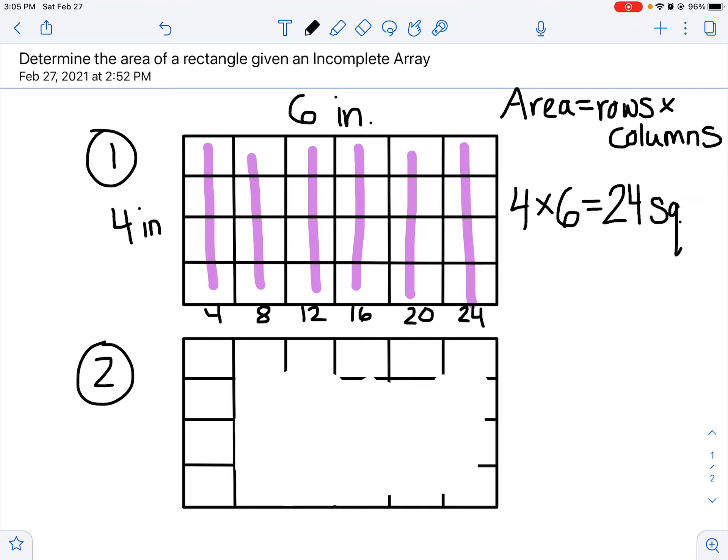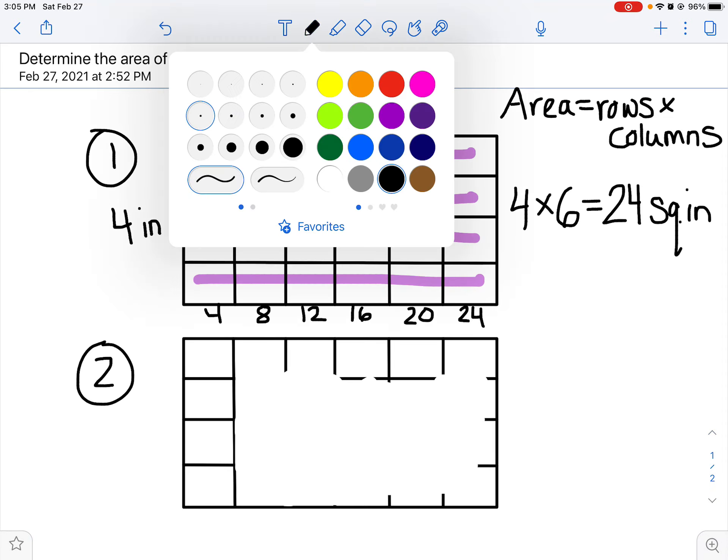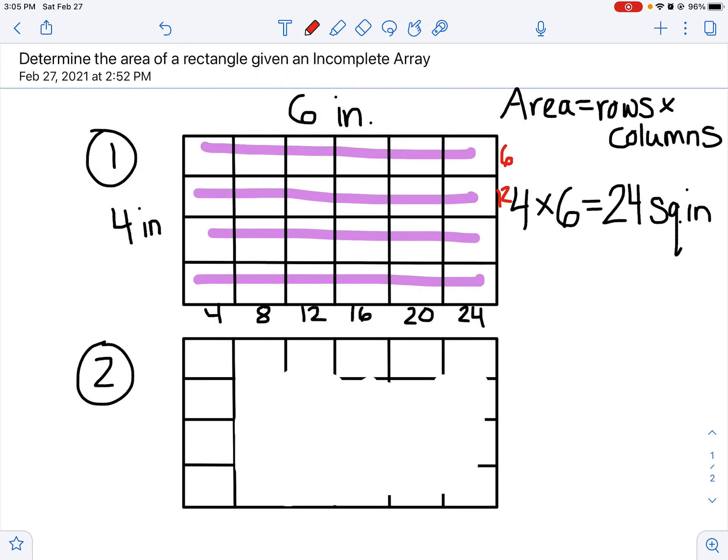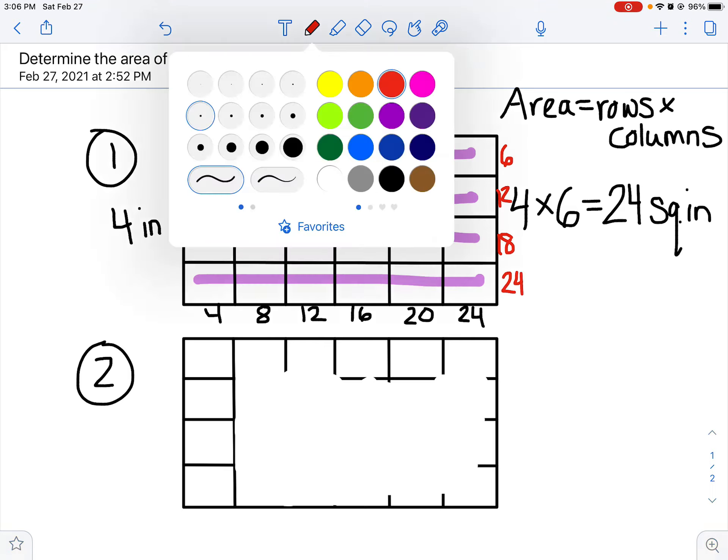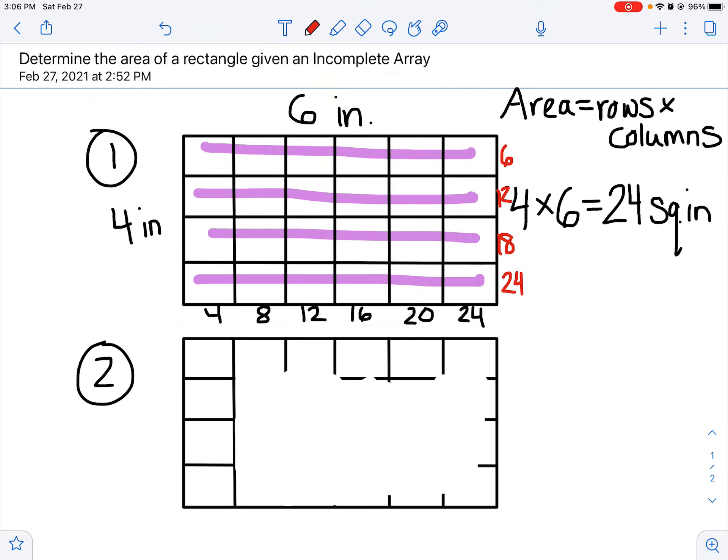Don't forget those units—square inches. I could also choose to count by sixes if I'm comfortable with that: six, twelve, eighteen, twenty-four. You could also consider, and I've seen some of you doing this, using the distributive property. Maybe you want to break that four up into a two and a two and say I know what two times six is, so I'll just do two times six plus two times six, which gives me twelve plus twelve to equal my twenty-four square inches. We want to start recognizing that we can use all these strategies for multiplication when we're finding the area.